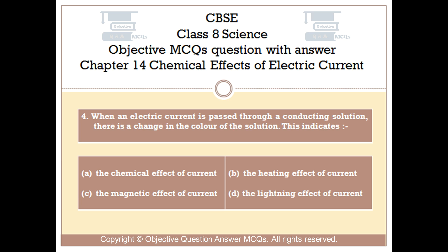Question number 4. When an electric current is passed through a conducting solution, there is a change in the color of the solution. This indicates: Option A the chemical effect of current, Option B the heating effect of current, Option C the magnetic effect of current, Option D the lightning effect of current.